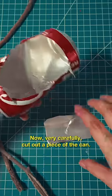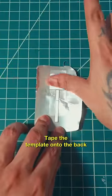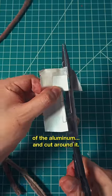Now, very carefully, cut out a piece of the can. Tape the template onto the back of the aluminum and cut around it.